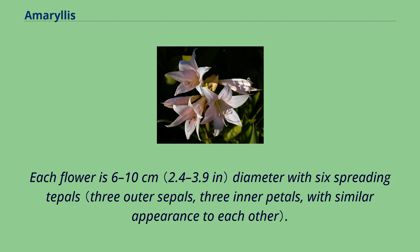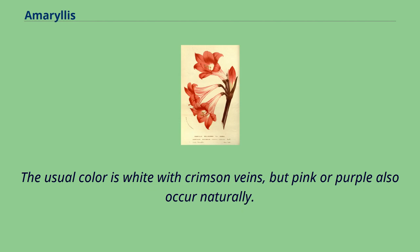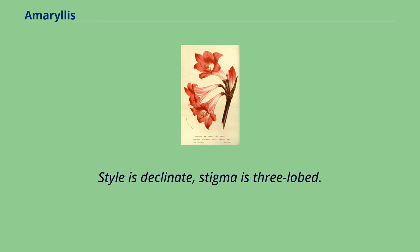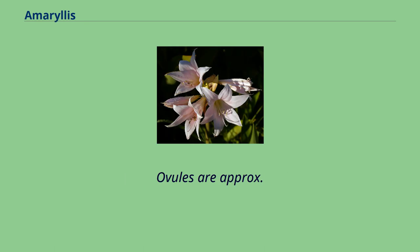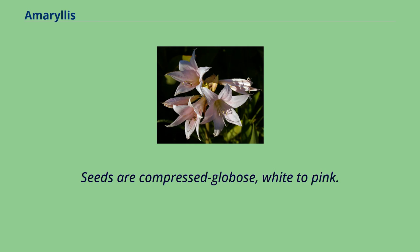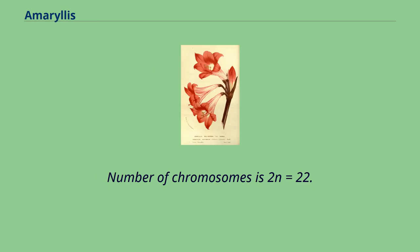Each flower is 6 to 10 centimeters in diameter with six spreading tepals. The usual color is white with crimson veins, but pink or purple also occur naturally. Stamens are very shortly connate basally, declinate, and unequal. The style is declinate and the stigma is 3-lobed. Ovules are approximately 8 per locule. Seeds are compressed globose, white to pink. The chromosome number is 2n = 22.